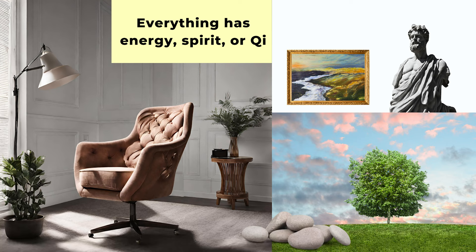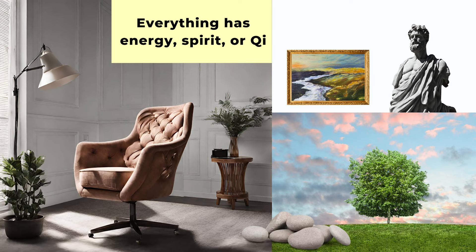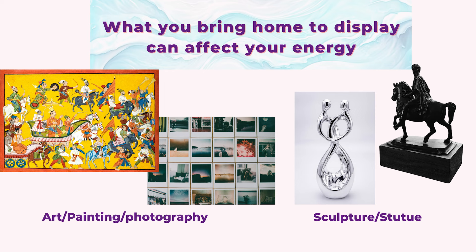In ancient China and many other countries, people believe everything holds certain energy and they think there is a spirit in everything. For example, a tree has a tree god, a stone has a stone god. In today's terms, people can argue that everything has a certain electromagnetic field and you can change your own energy or the qi by surrounding yourself with different objects.